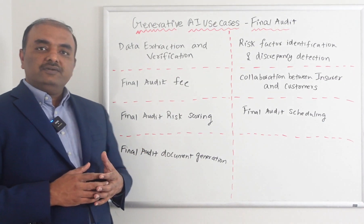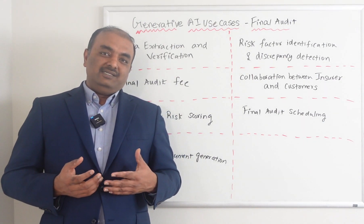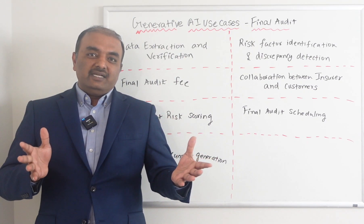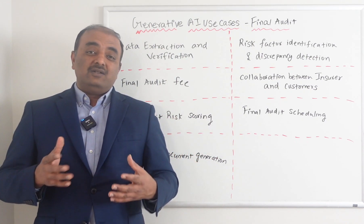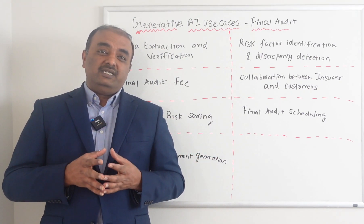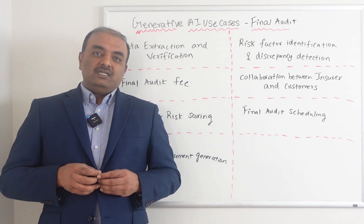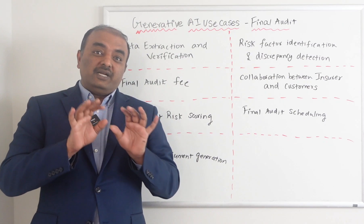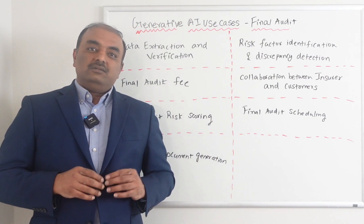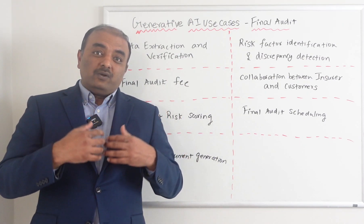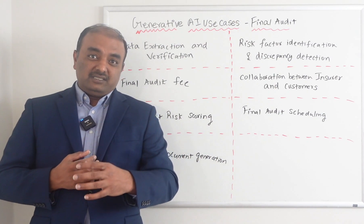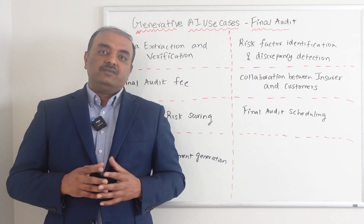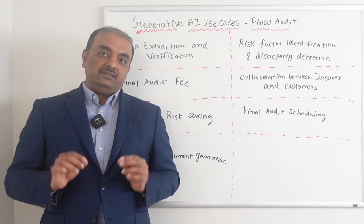Document generation is a very key use case. Generative AI can automatically generate documents, and since Final Audit is the end state of the entire process, it requires a lot of document generation. For example, the system can generate the final audit receipt and send it to the customer for them to enter the actual payroll, or collect the actual payroll from the payroll provider and enter it in the system — all done automatically instead of somebody manually creating it.